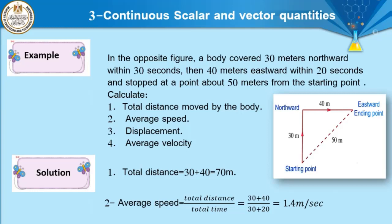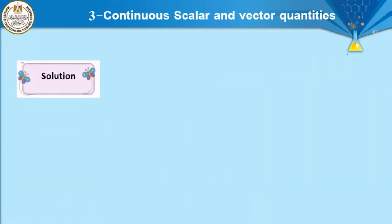Number three, displacement: it is the shortest distance between the starting point and ending point. The distance between start and end equals 50 meters. The direction of displacement from starting to ending point is north-east. So displacement equals 50 meters in the north-east direction.